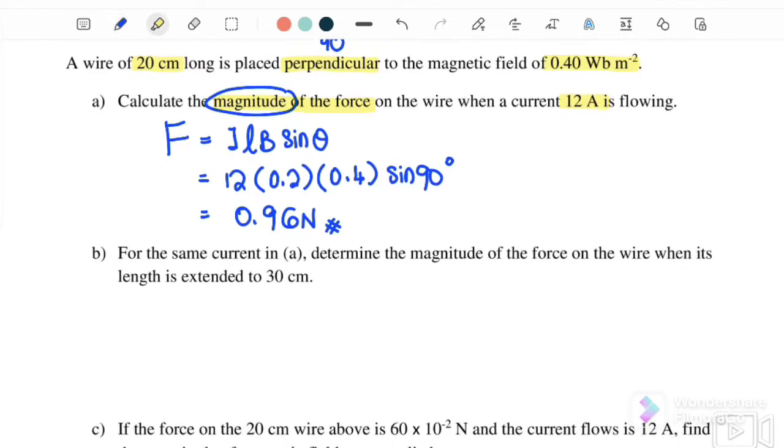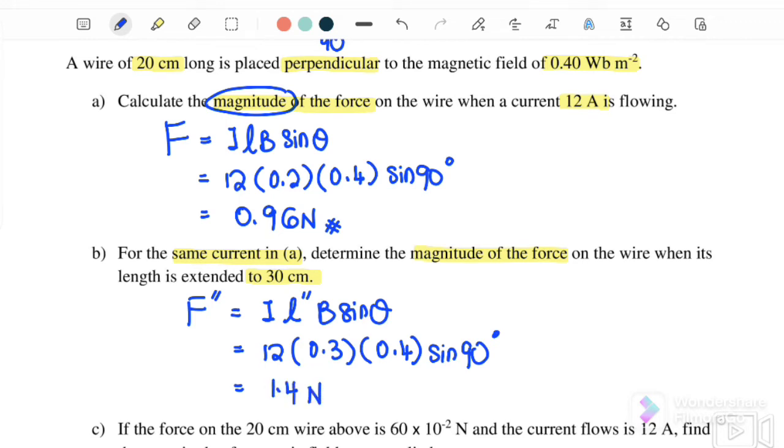For the same current, determine the magnitude of force on the wire when its length is extended to 30 cm. So initially it is 20 cm, now we extend the length to 30 cm. So the new force equals ILB sine theta. We substitute: I is 12, new length is 0.3, B is still the same 0.4, sine 90 degrees. Therefore the magnitude of the force is equal to 1.44 N.